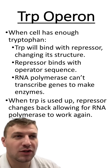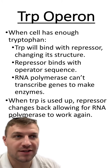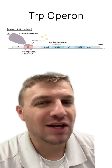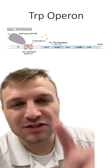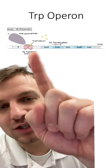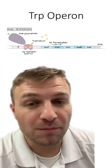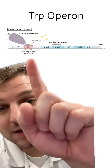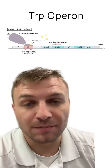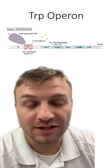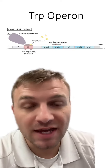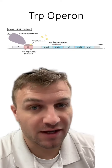It wouldn't be a good use of resources and energy if the cell kept on making tryptophan when it already had enough. You can see in our illustration the tryptophan binding to the repressor, which changes its shape and function. The repressor then binds to the operator sequence, stopping transcription by preventing RNA polymerase from binding to the promoter.